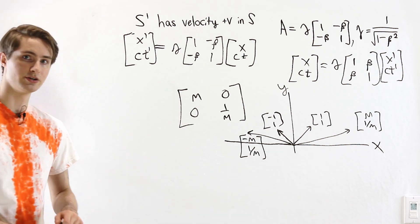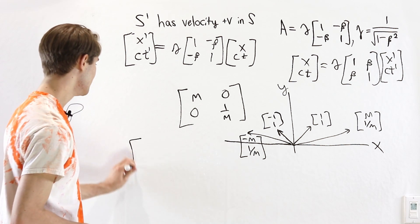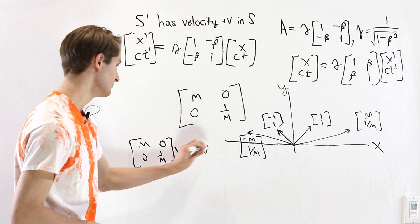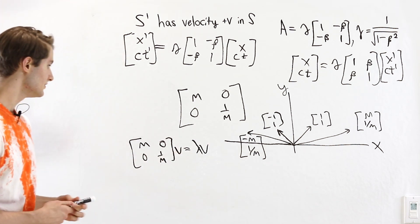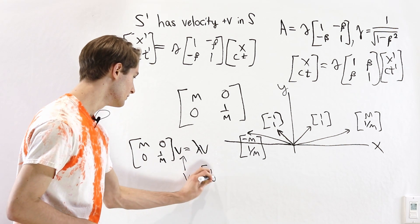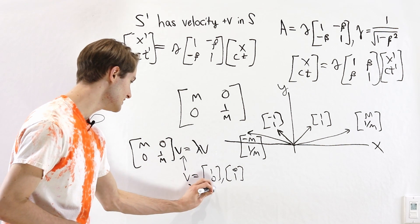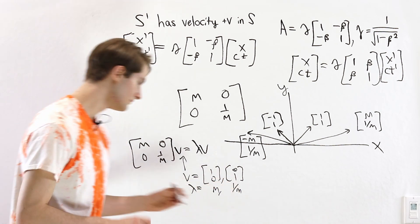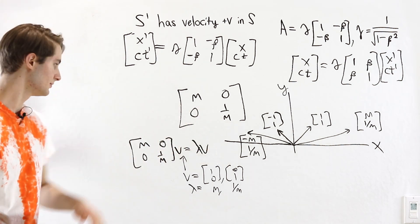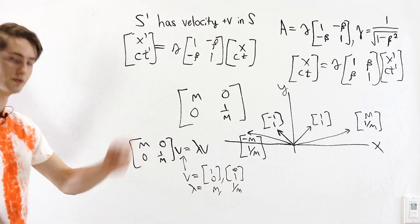Now if we look at this diagonal matrix, and we compute its eigenvalues, we ask when is M, 0, 0, 1 over M, V, equal to lambda V. It's pretty easy to see that the two eigenvectors are going to be V equals 1, 0, and 0, 1. And the eigenvalues are going to be M and 1 over M. Because if we take this matrix and multiply it by 1, 0, the result is M, 0. And similarly over here, we get 0, 1 over M.